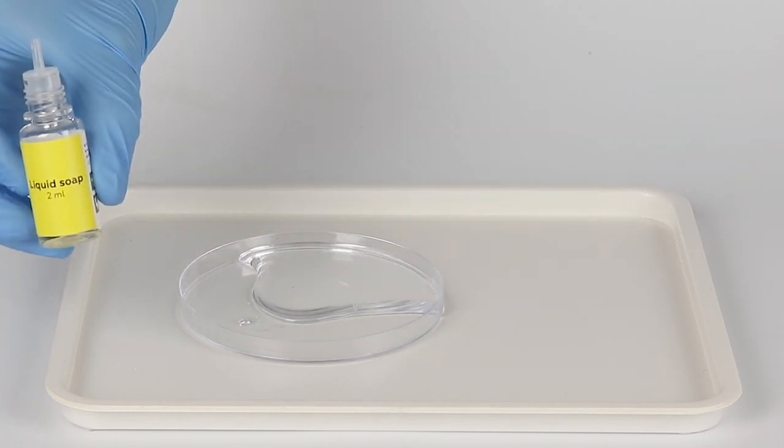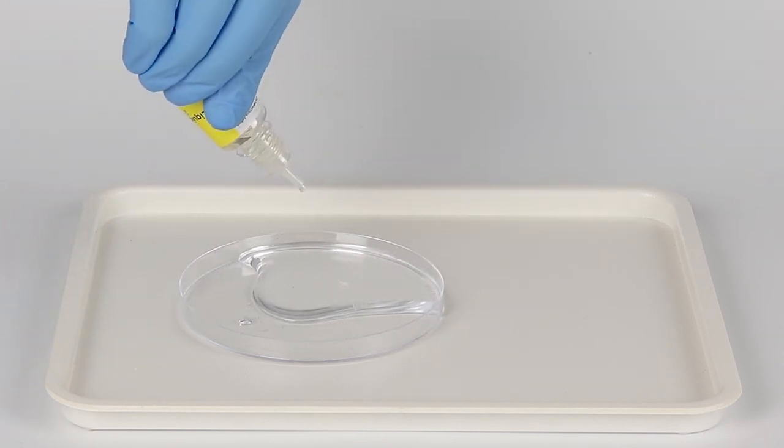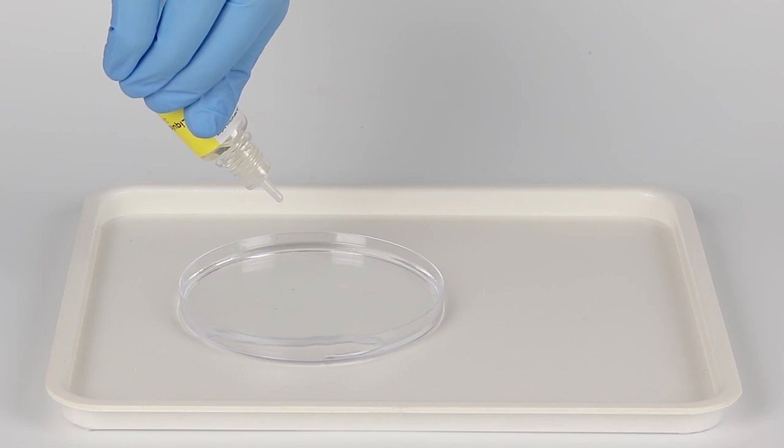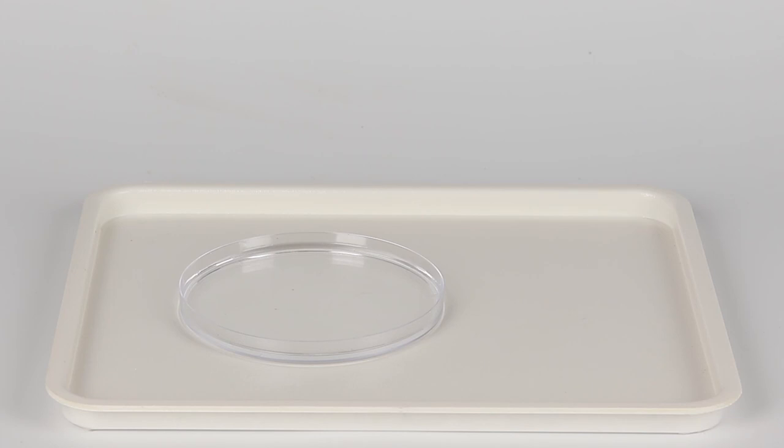Add two droplets of liquid soap to make the liquid spread evenly across the bottom of the petri dish. When liquid soap is added, it reduces the surface tension of the solution. In other words, it acts as a surface active agent, causing the solution to spread.